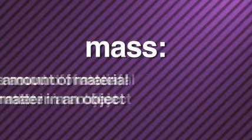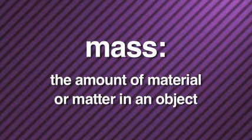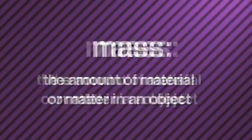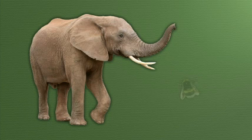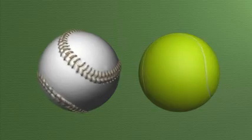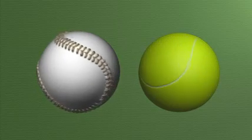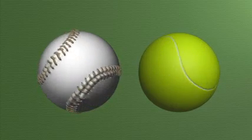Another characteristic similar to all matter is that all matter has mass. What is mass? Mass is the amount of material or matter in an object. An elephant, for example, has more mass than a bee. And even though this baseball and this tennis ball are the same size, the baseball has more mass.